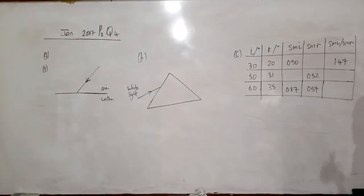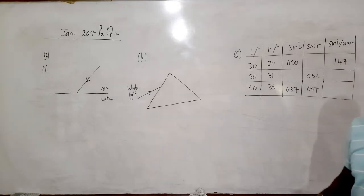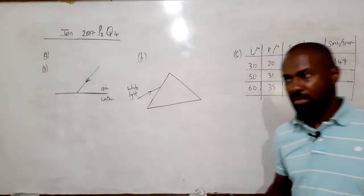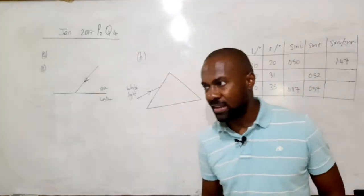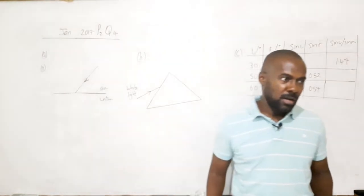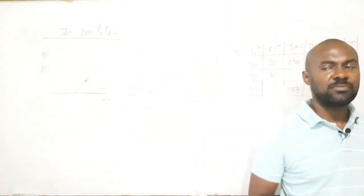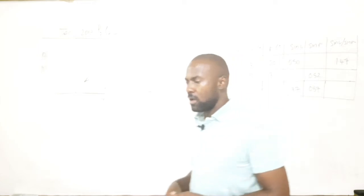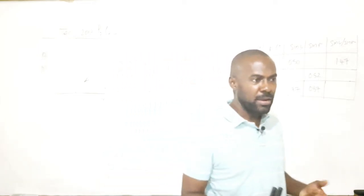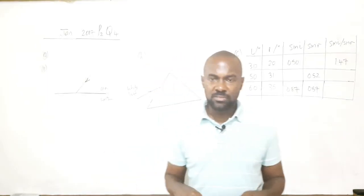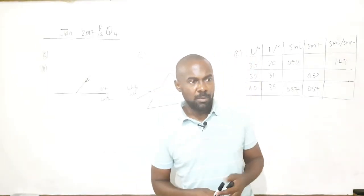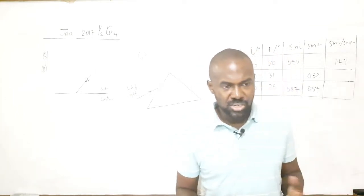Part a(i) of the question says: state two examples of observations which provide evidence that light can be refracted. The two most evident observations are: one, a straw, pen, or pencil in a drinking glass appearing to be bent. If you have a glass of water and you put a pen or pencil in it and look at it, it appears to be bent due to refraction.